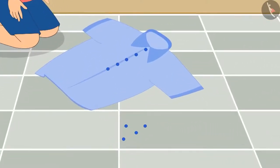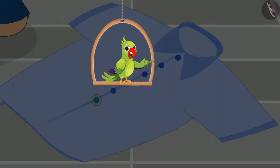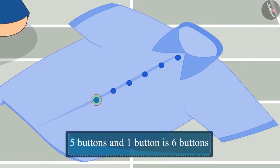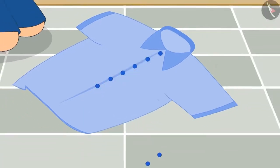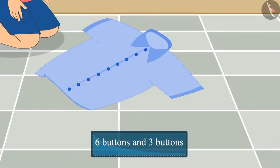Through hard work, Chutu stitched one more button after five buttons. Think and answer — how many buttons are stitched on Chutu's shirt in total? Yes, you are correct — five buttons and one button, there are a total of six buttons stitched on Chutu's shirt. Good work. In the end, Chutu stitched three more buttons on his shirt, so now there are six buttons and three more buttons.